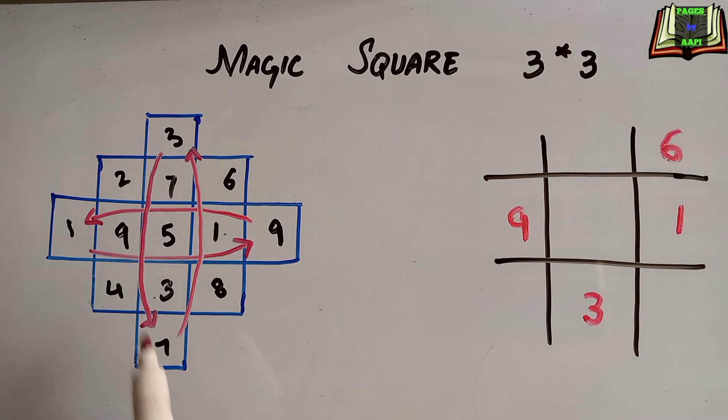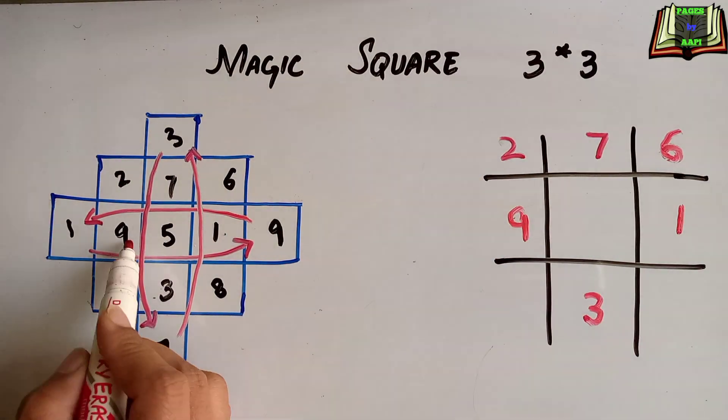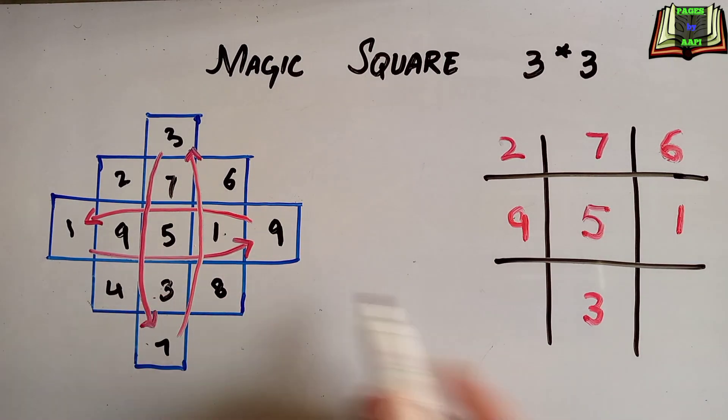Now this will be the first row: 2, 7, 6. This will be the second row, write the missing number. And this will be the third row: 3 is given, right, 4, 3, 8.